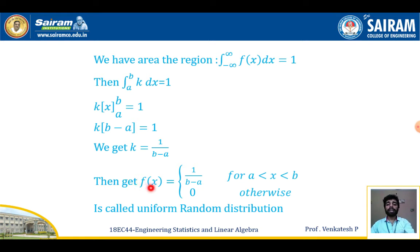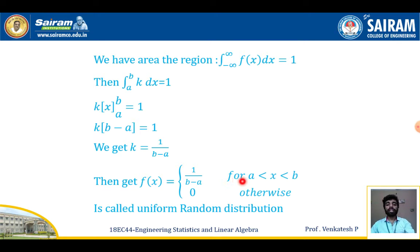Therefore, f(x) = 1/(b - a) for a < x < b, and 0 otherwise. This is the probability density function of the uniform random distribution.